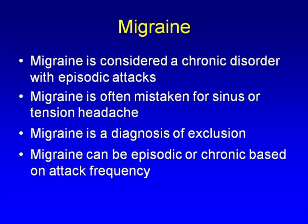We consider migraine a chronic disorder with episodic manifestations. It's sometimes mistaken for sinus headaches — patients come in saying 'I have sinus headaches,' but with a little more history you find out they actually have migraine. It's diagnosed by exclusion, and can be episodic or chronic based on frequency, which is very important because we have Botox available, and you need to know the diagnosis of chronic migraine to find patients eligible for those injections.